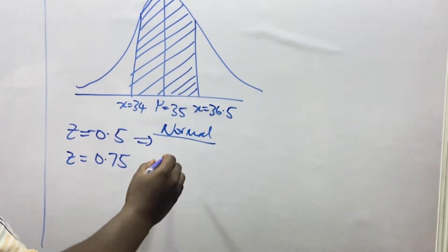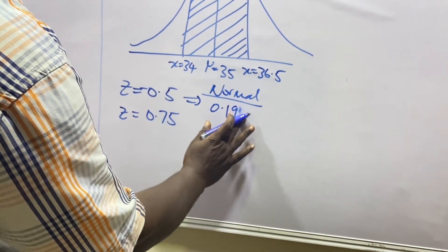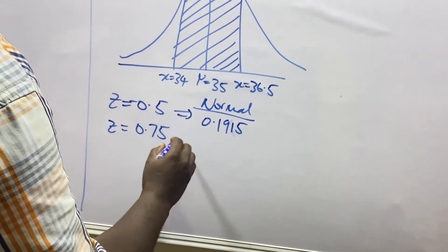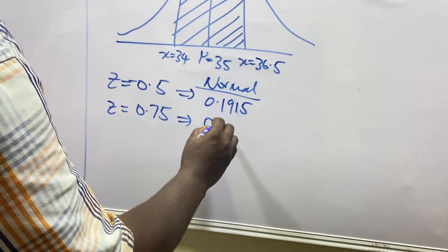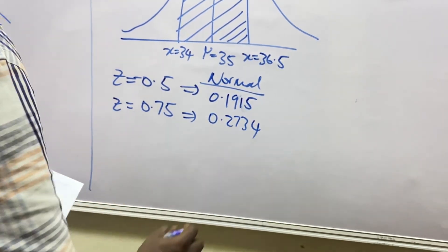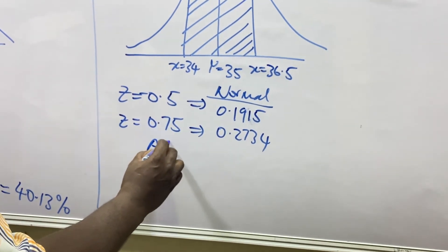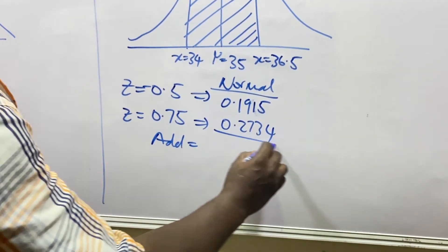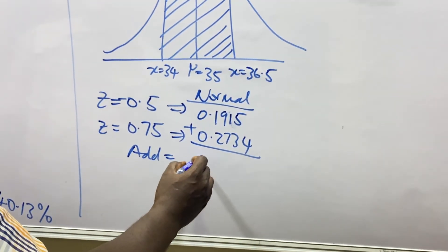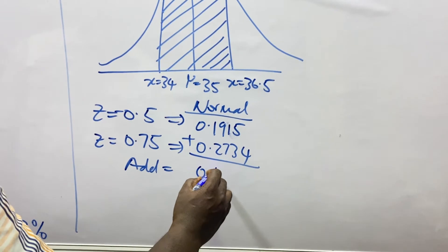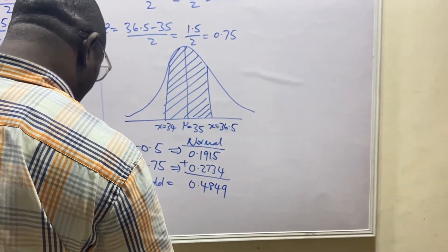The normal table values we found are 0.1915 and 0.2734. Since the two points are on opposite sides of the curve, we add these values together. Adding them gives us approximately 0.4649.